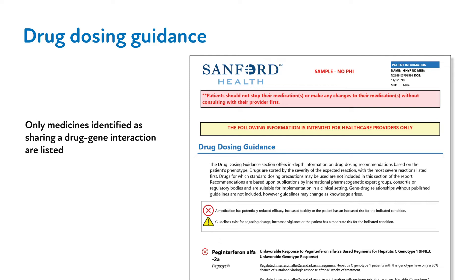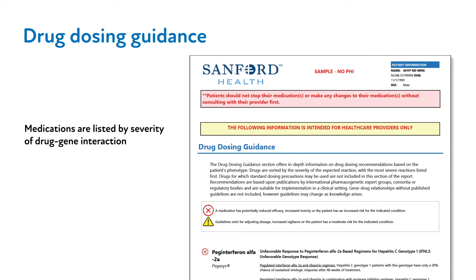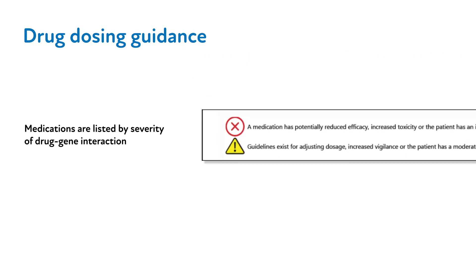In this section, only medicines identified as having a drug-gene interaction that may result in reduced efficacy or increased toxicity are listed. Thus, those medications listed in the green standard precautions column within the Potentially Impacted Medications table are not found in this section. Drug-gene interactions are listed by severity, with those predicted to be most severe listed first and marked with a red circled X symbol. Less severe interactions are represented by a yellow triangle with an exclamation mark symbol.